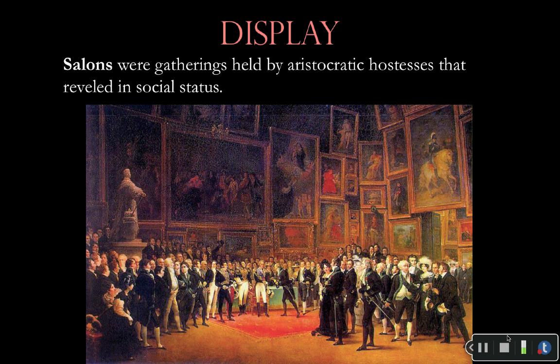For instance, we have what we call salons. These were gathering places, and oftentimes salons were hosted by aristocratic hostesses. This was one way for them to revel in and show off their social status and compare it to those of others. Here's a painting of a salon so you can see it's very different than what we see today. You see the higher classes, the aristocrats, and the display of paintings — smaller paintings closer to the floor, and as you go up the paintings get bigger.